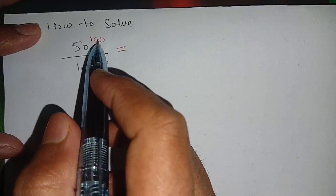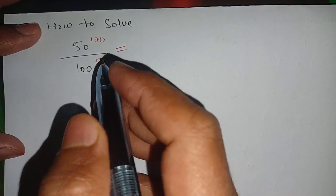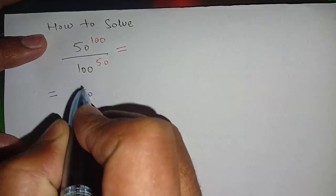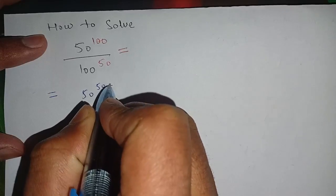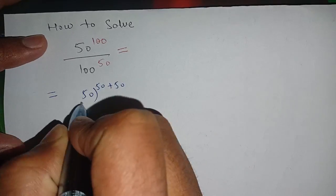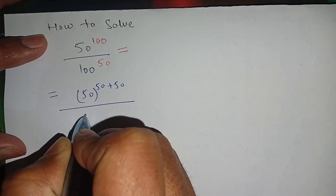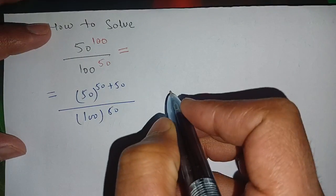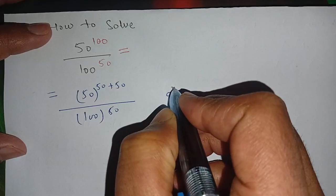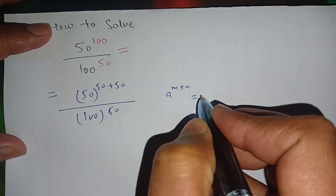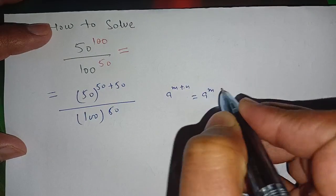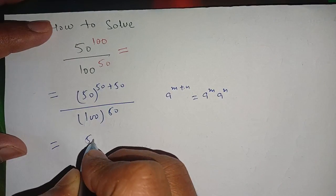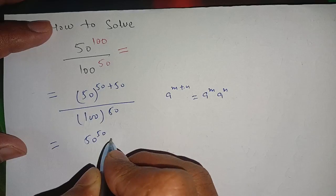How to solve 50 power 100 divided by 100 power 50. We can write 50 power 100 as 50 plus 50, divided by 100 power 50. We know the identity: a power (m+n) is equal to a power m into a power n.